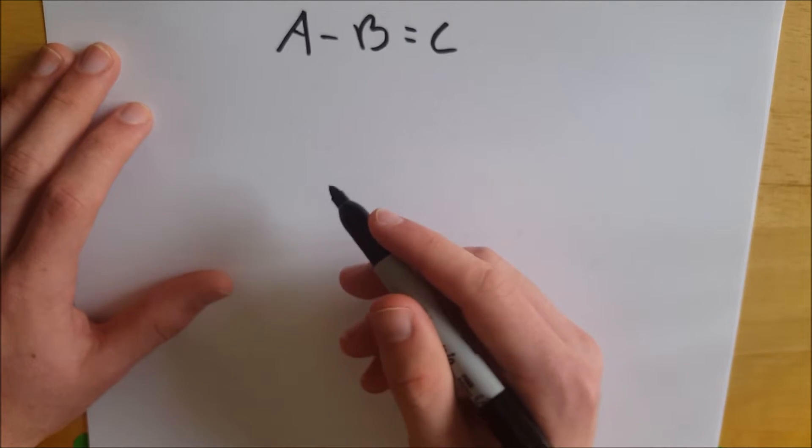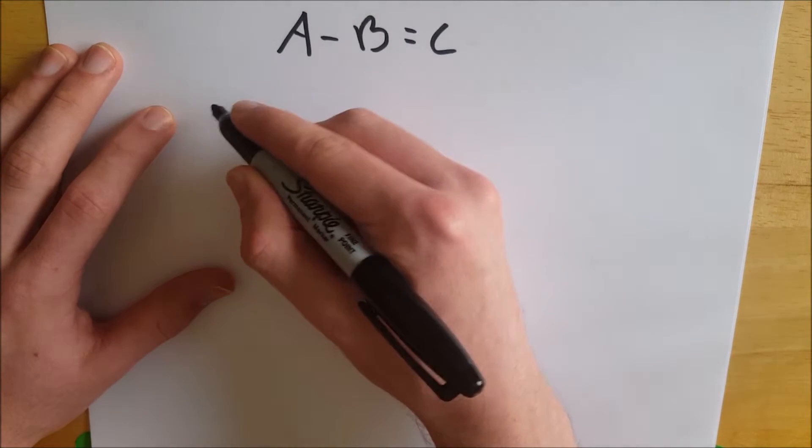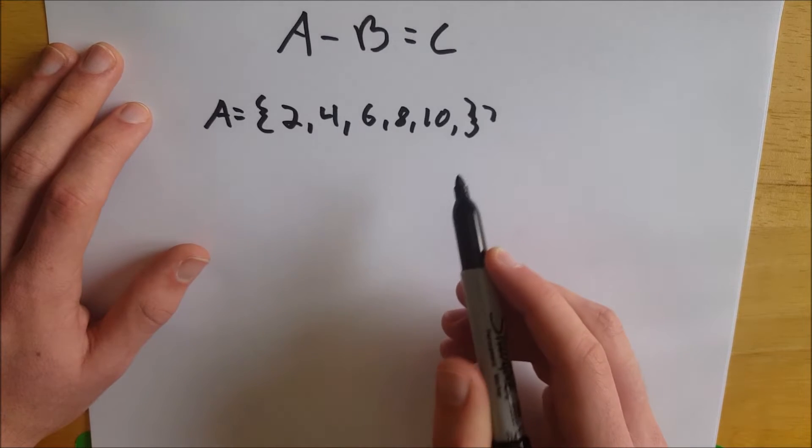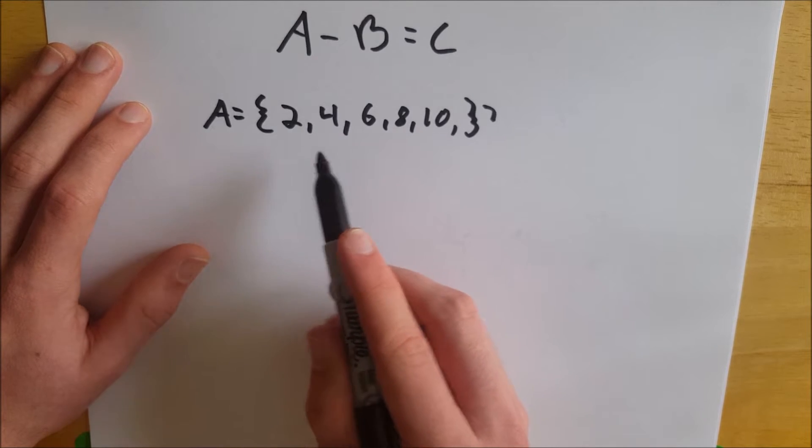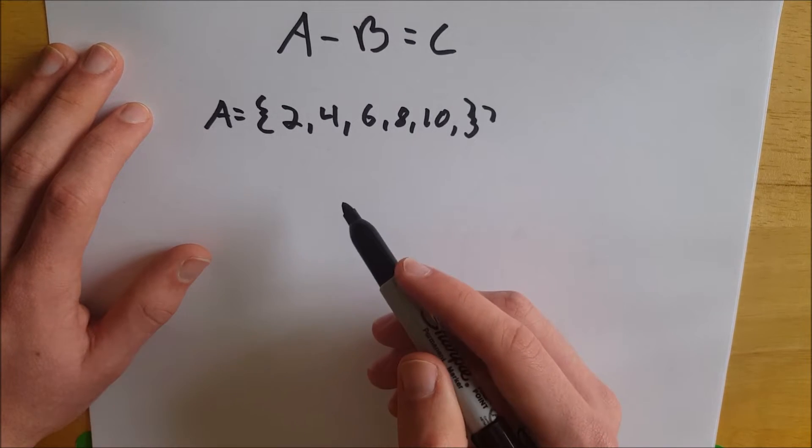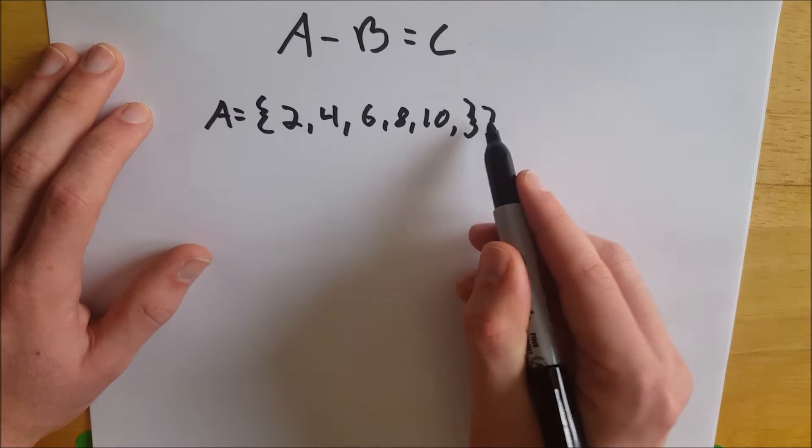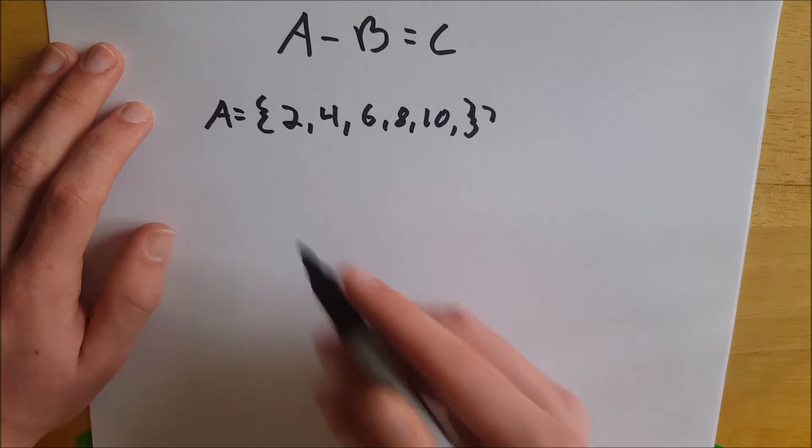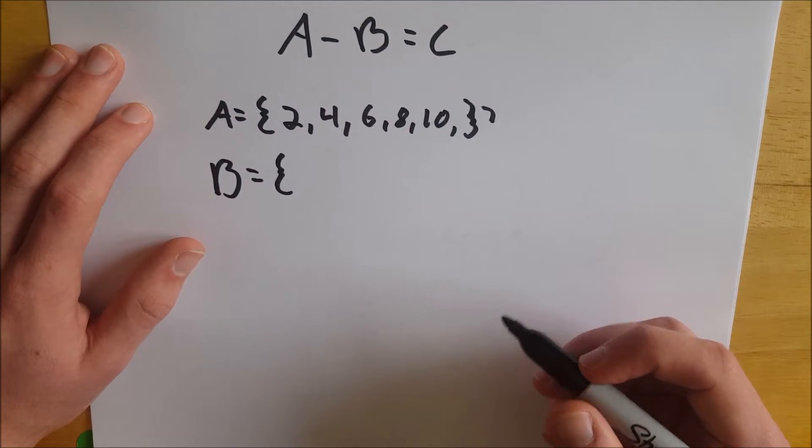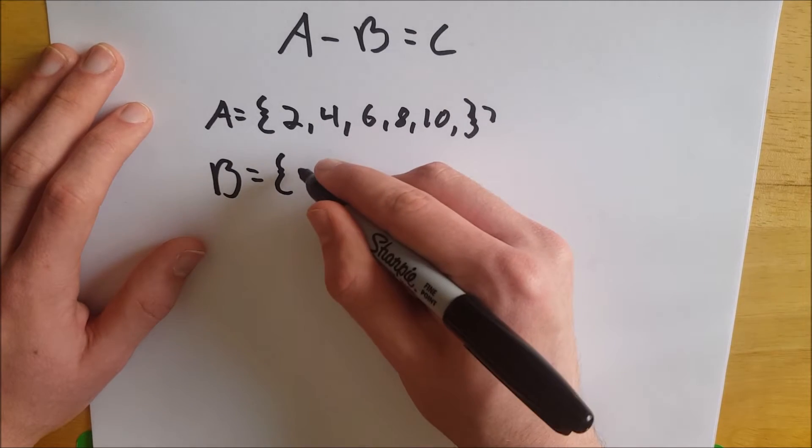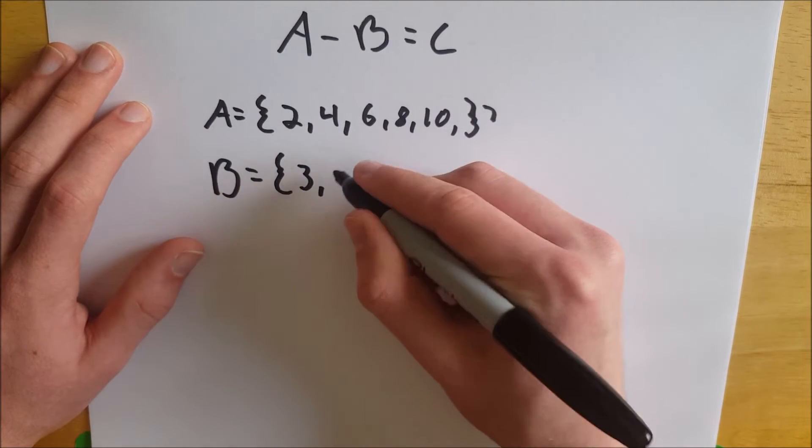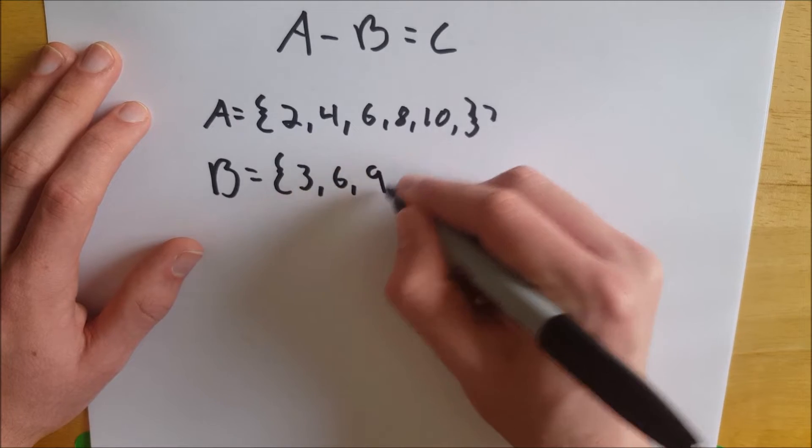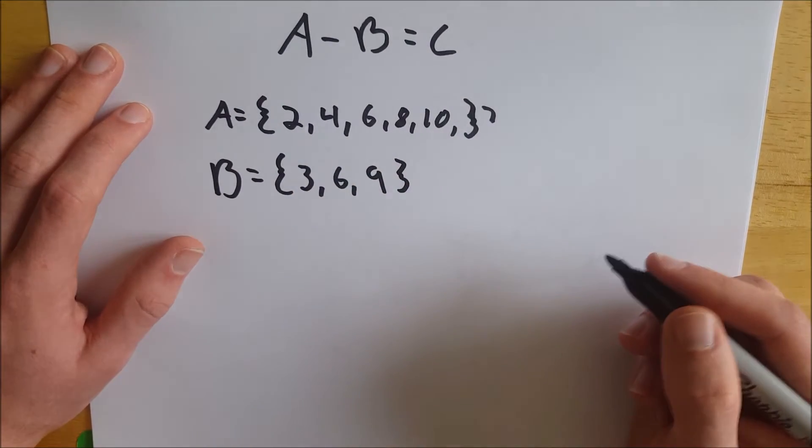So we're going to define A as all positive even numbers less than or equal to 10. I didn't say positive the first time, I meant to. Excuse that little mark I accidentally made there. Then we're going to define B as all positive multiples of 3 that are less than or equal to 10. So we get 3, 6, and 9.